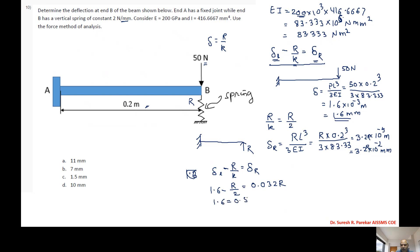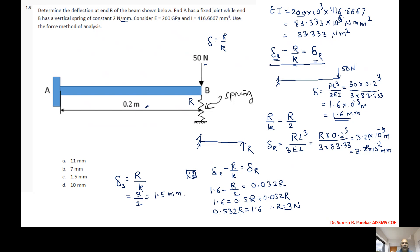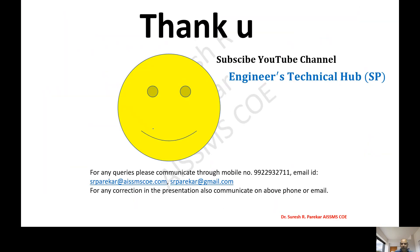We get 1.6 = 0.5R + 0.032R = 0.532R, therefore R = 1.6/0.532 = 3 N. Now delta due to spring = R/k = 3/2 = 1.5 mm. The question asks to determine the deflection at end B, which is the spring displacement, and the answer is 1.5 mm, which is answer C.